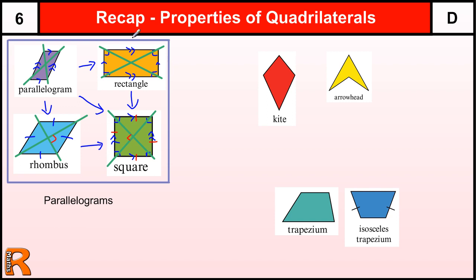A rectangle has two lines of symmetry — the diagonal is not a line of symmetry for a rectangle. It has order-two rotational symmetry. A parallelogram has no lines of symmetry but has order-two rotational symmetry. A rhombus has two lines of symmetry and order-two rotational symmetry. A square has four lines of symmetry — vertical, horizontal, and both diagonals — and order-four rotational symmetry.